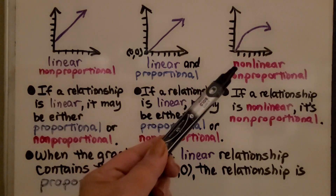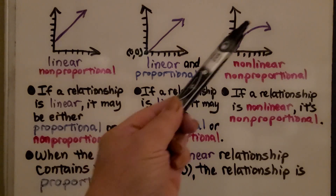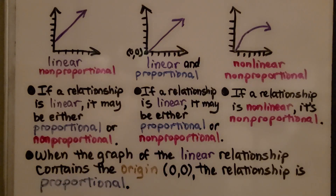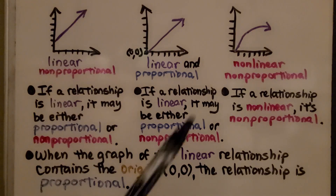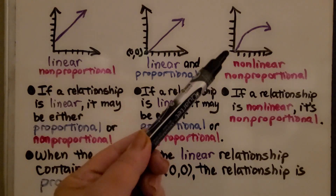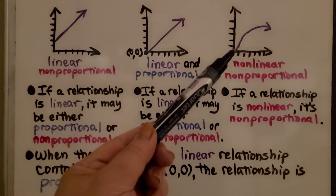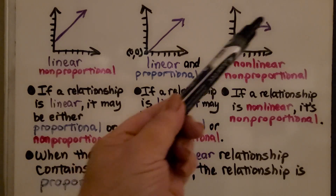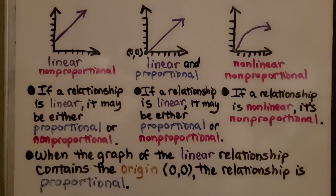Now look at this one. This line is doing a curve — it's non-linear, it's not a straight line. And the rule is: if the relationship is non-linear, it's automatically non-proportional. So this is non-linear and non-proportional, even though it's going through the origin. Because it's non-linear, it's non-proportional. When the graph of the linear relationship contains the origin (zero for x, zero for y), the relationship is proportional.